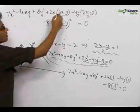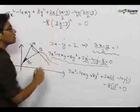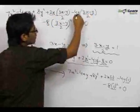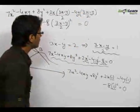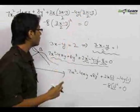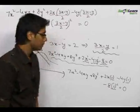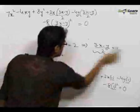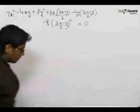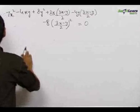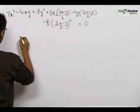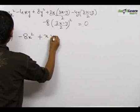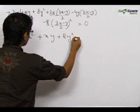We can clearly see that the (3x − y) term has provided a degree to the x term which was originally degree 1. Similarly, (3x − y) provides a degree to y, and (3x − y)² provides 2 degrees to the constant term. On solving and rearranging, we get: −8x² + xy + 8y² = 0.